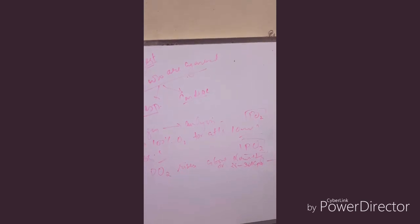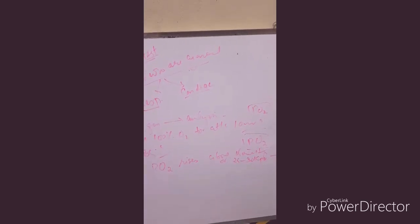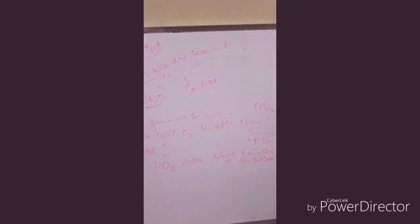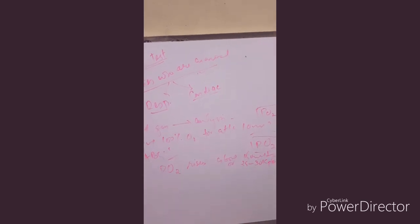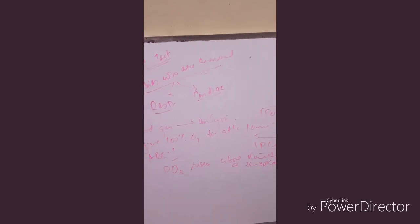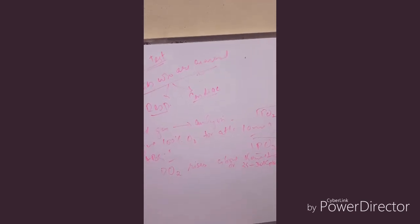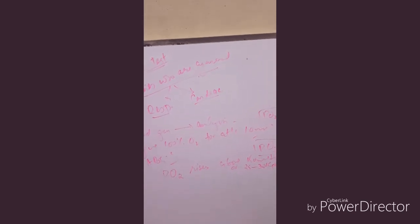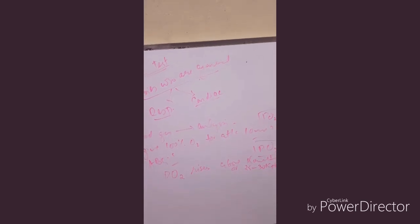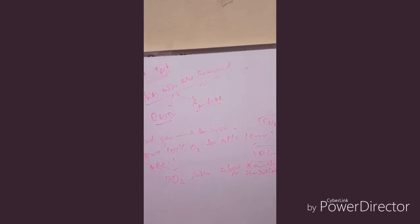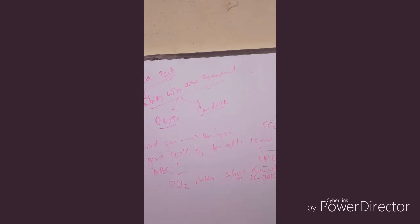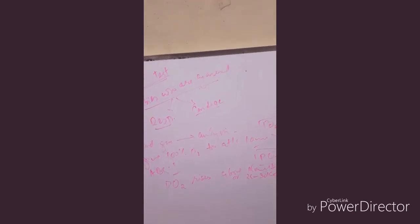If the pO2 improves on giving 100% FiO2, this means that initially the lung was not oxygenating the blood to the maximum. But we have now given 100% oxygen which will more oxygenate the blood coming to the lungs and oxygenation in the lung has improved.